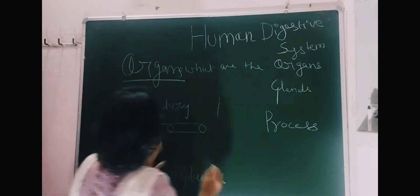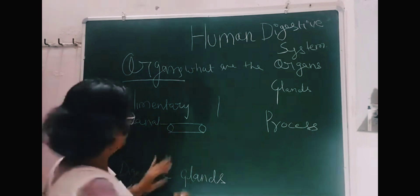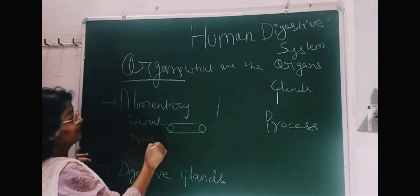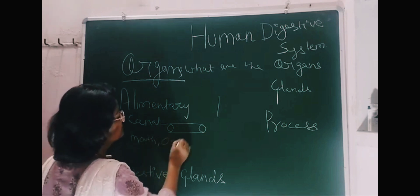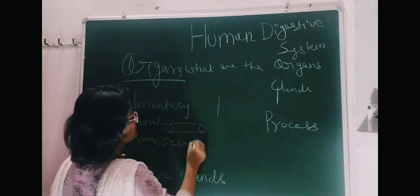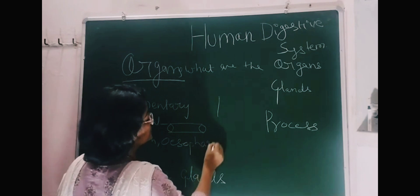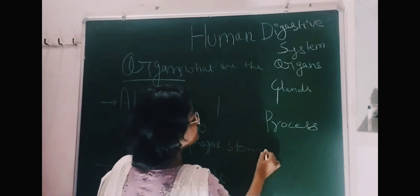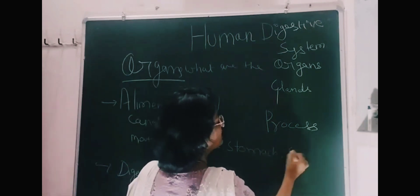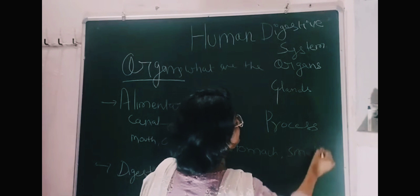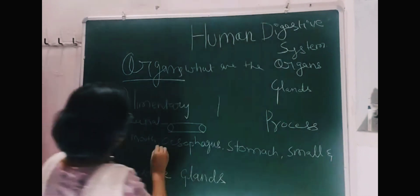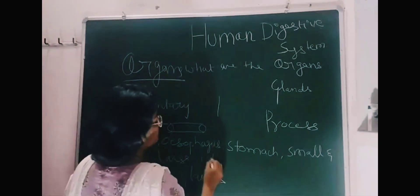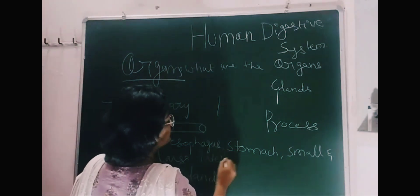The alimentary canal consists of mouth, esophagus, stomach, small and large intestine. So these are the organs.